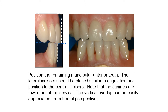Regarding the position of the remaining mandibular anterior teeth: the lateral incisor should be placed with similar angulation to the central incisors. Note that the canine is toed out at the cervical area. The vertical overlap can be easily appreciated from the frontal perspective.